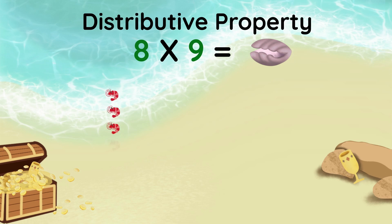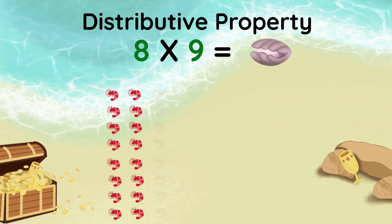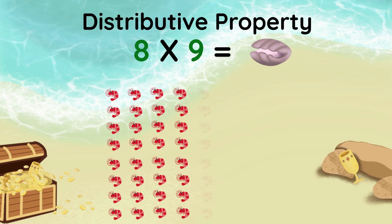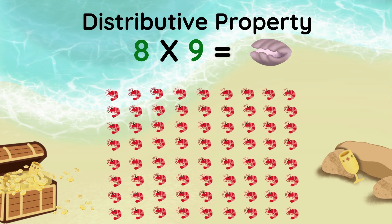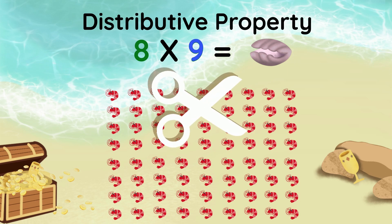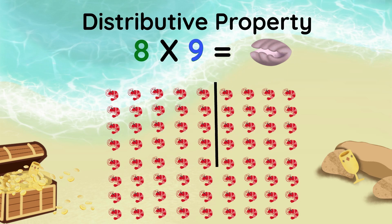1, 2, 3, 4, 5, 6, 7, 8 — 8 rows and 9 columns. First, I will cut 9 into two smaller parts: 5 and 4.